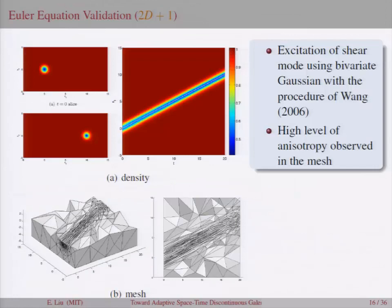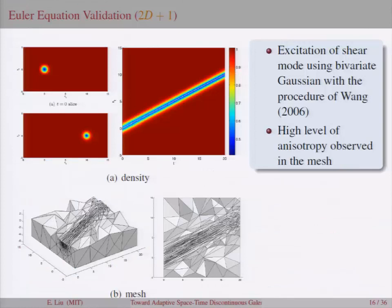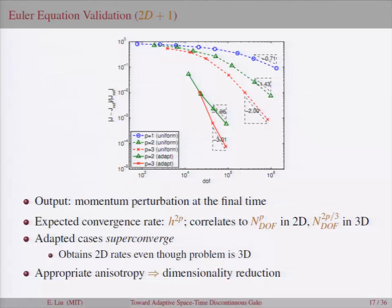We can consider a slightly more complicated problem in 2D plus one. So, it's still the Euler equations and now we're looking at two spatial dimensions plus one temporal, exciting the shear mode. And if you look at the meshes, you can see a high degree of anisotropy. And if you look at the convergence history, here's another way of evaluating why space-time can add a lot of efficiency. And that is if you look at the expected convergence rate for DG method, it's H to the 2p. In 2D, this correlates to the number of degrees of freedom raised to the pth power. And in 3D, it's the number of degrees of freedom raised to the 2p over 3. In the uniformly refined cases, this was a genuine 3D problem. So, these uniformly refined cases achieve convergence rates that are commensurate with the 3D result. But with the adapted results, actually super converge and they achieve the 2D rates even though we're solving a 3D problem. And the only conclusion you can draw from that is that the dimensionality is, again, reduced.